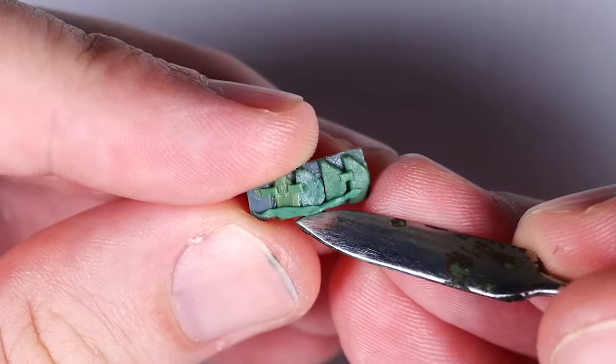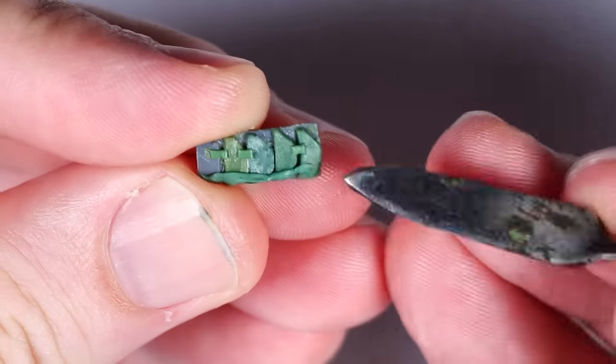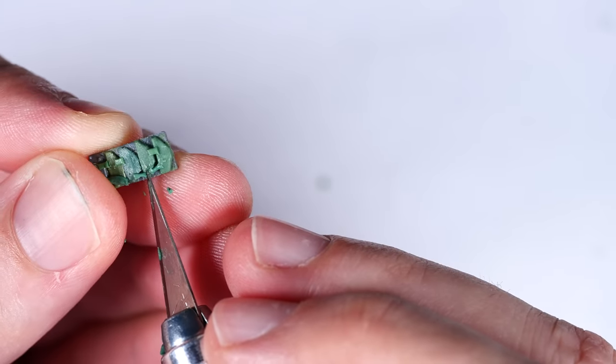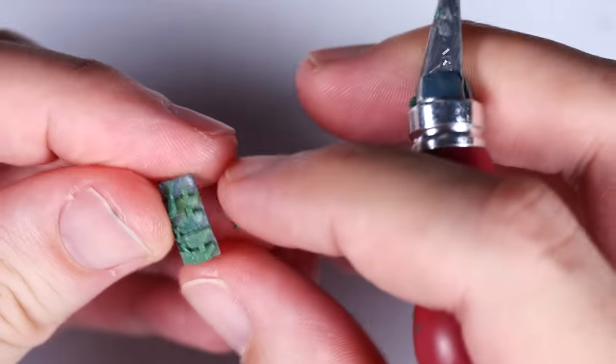All I really do here is roll up a thin tube of green stuff, press it into the armor plates where I want the connectors to be, and carefully cut out the parts I don't want remaining, leaving just the appearance of metal connectors tying the metal plates together.